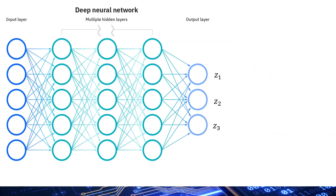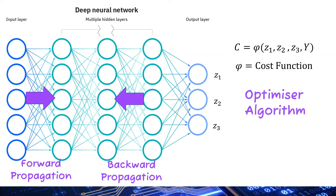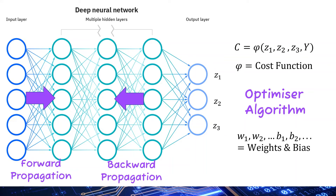Deep learning works through iterative forward and backward propagations. In forward propagation, the movie review word vector passes through the deep learning architecture and arrives at the output neuron predicting a probability for positive sentiment. The difference between the prediction and the actual truth is measured by a cost function. In backward propagation, the optimizer adjusts weights and biases slightly based on this difference. This process repeats many times to tune all model parameters.